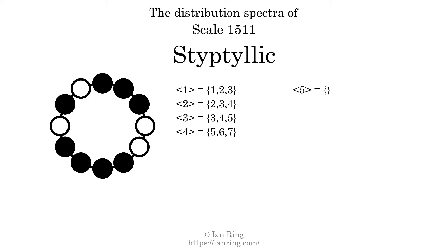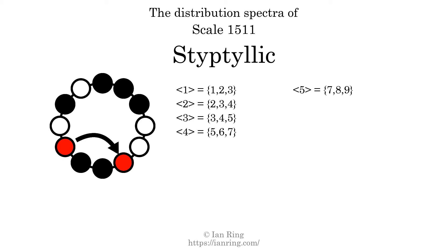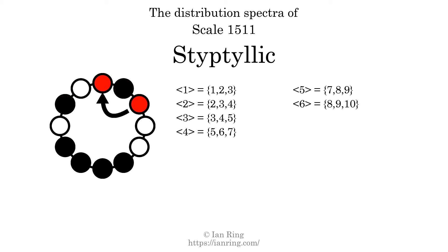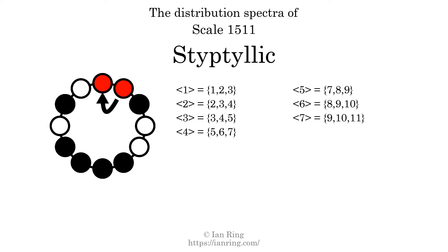The generic interval of 5 scale steps comes in 3 different specific interval sizes: 7 semitones, 8 semitones, and 9 semitones. The spectrum width is 2. The generic interval of 6 scale steps comes in 3 different specific interval sizes: 8 semitones, 9 semitones, and 10 semitones. The spectrum width is 2. The generic interval of 7 scale steps comes in 3 different specific interval sizes: 9 semitones, 10 semitones, and 11 semitones. The spectrum width is 2.